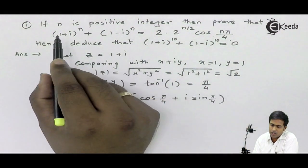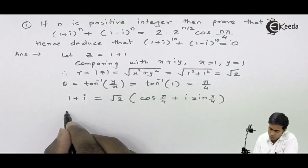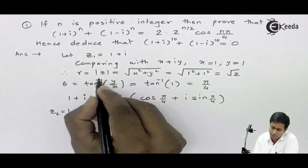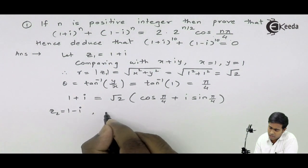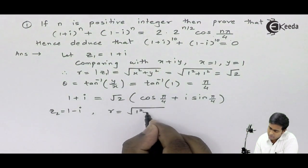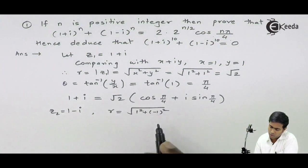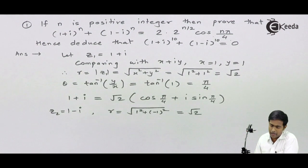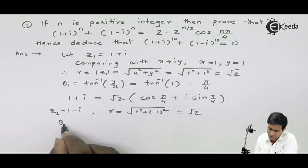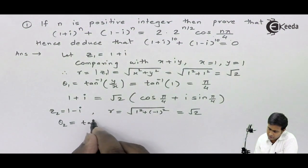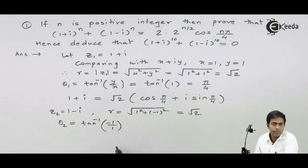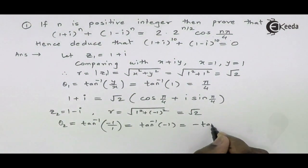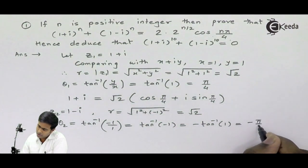Similarly, I will convert the second number 1-i into polar form. For this second number, r = √(1²+(-1)²) = √2, since x=1 and y=-1. For θ₂, it will be tan⁻¹(y/x) = tan⁻¹(-1/1) = -tan⁻¹(1) = -π/4.